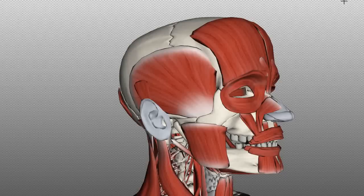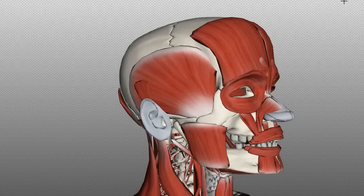There are four muscles that you need to know which are involved in mastication: the temporalis, the masseter, the medial pterygoid, and the lateral pterygoid.